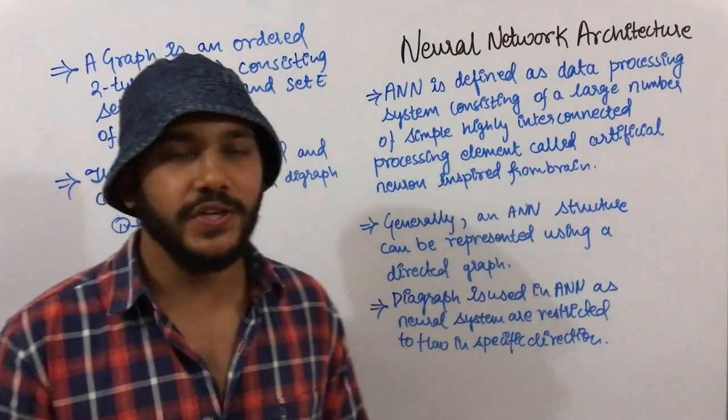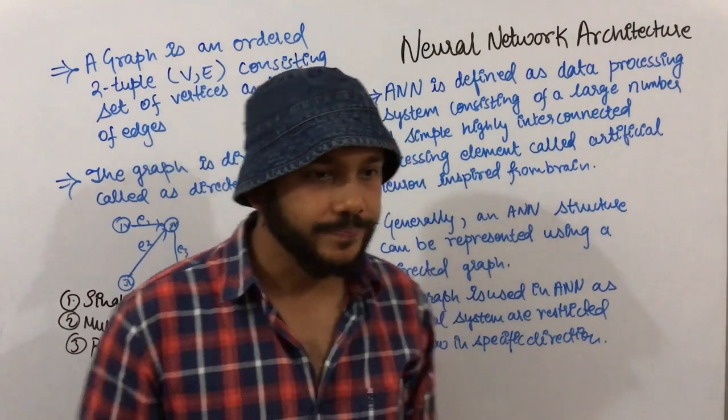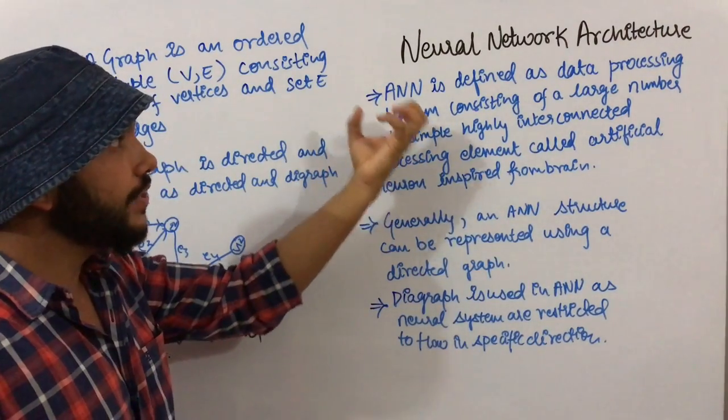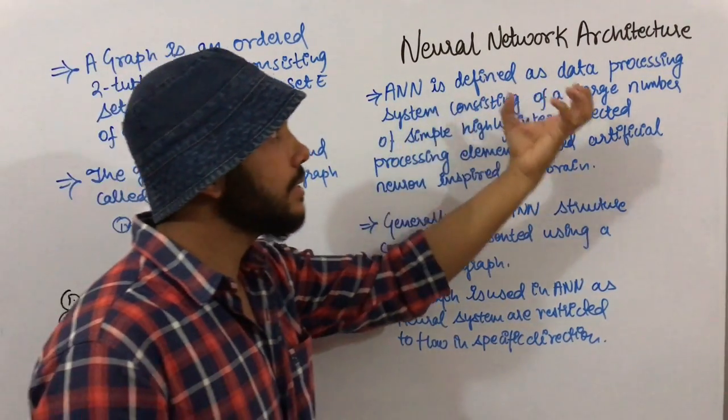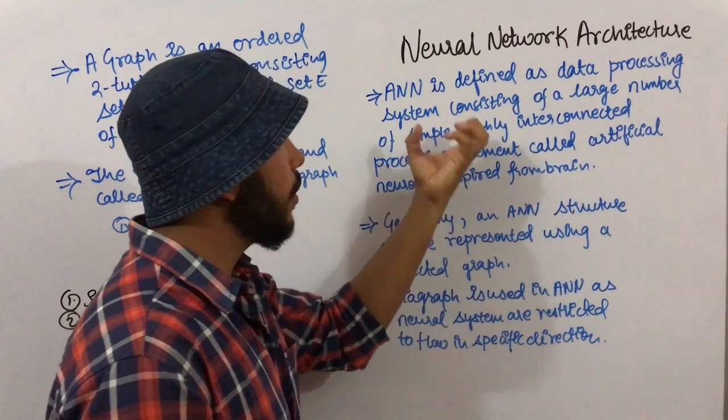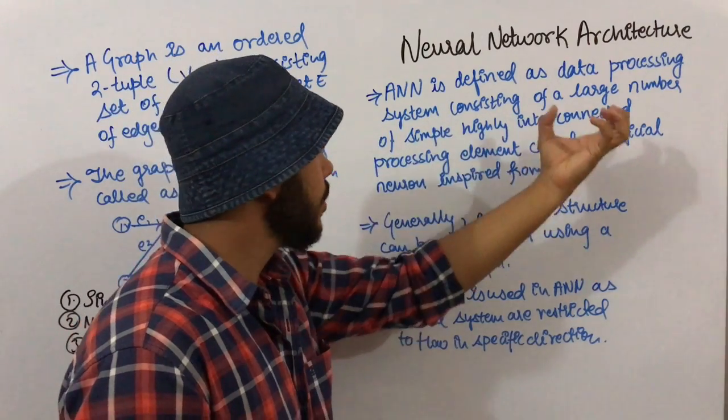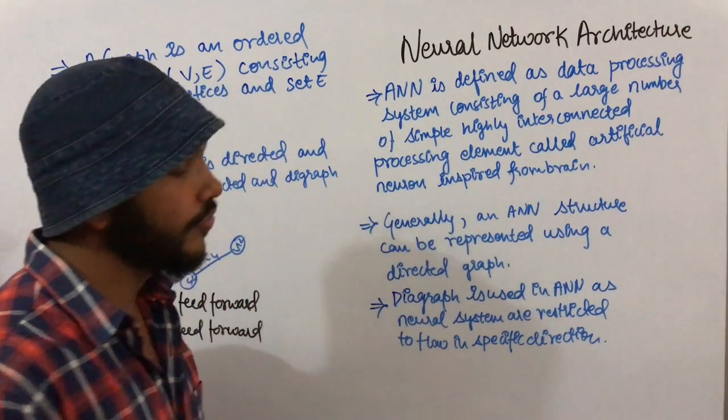Hi guys, in this video I'm going to talk about neural network architecture. Artificial neural network is defined as a data processing system consisting of a large number of simple, highly interconnected processing elements called artificial neurons.